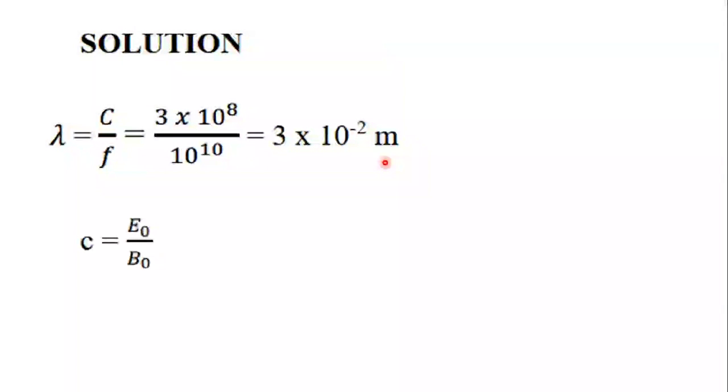Next, to find the electric field expression, we first need the peak value E₀. Using c = E₀/B₀, we get E₀ = c × B₀. Plugging in all the values, E₀ = 3 × 10³ N/C.